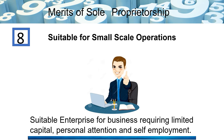The next point is that sole proprietorship is suitable for small scale operations. This kind of business is more suitable for small scale businesses because there is limited capital and limited managerial efficiency. When the business does not need to scale much, this is the best form to go for — with the least legal formalities, independent control, and flexibility. It is absolutely suitable for businesses requiring small capital, personal attention, and absolute control.